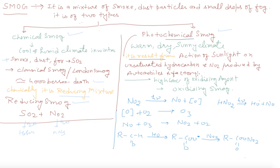The definition is: action of sunlight on unsaturated hydrocarbons and nitrogen dioxide produced by automobiles and factories. It contains high concentration of oxidizing agents, so it is called oxidizing smog.